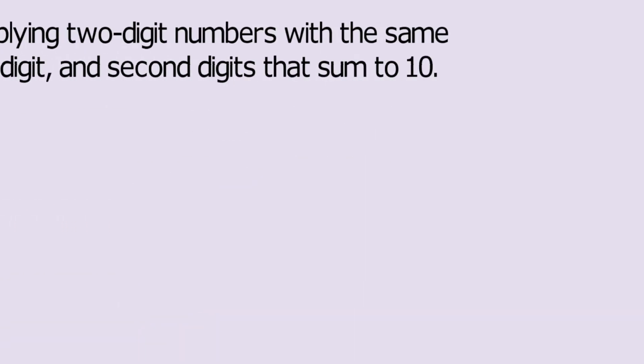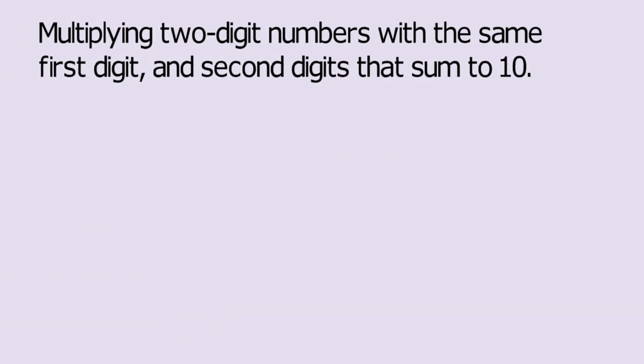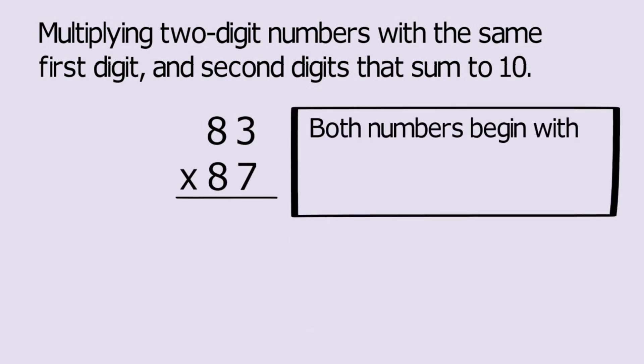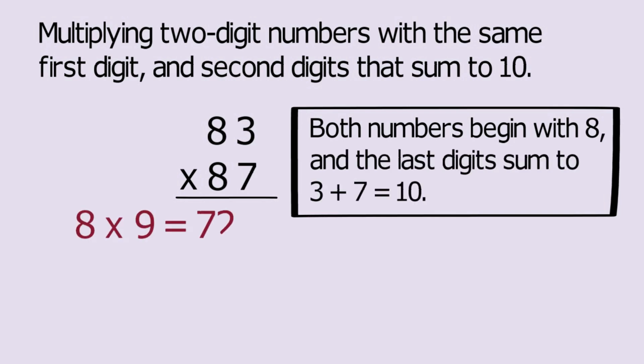We can use a similar trick when multiplying two digit number with the same first digit and the second digit number that sums to 10. The answer begins the same way that it did before, the first digit multiplied by the next higher digit followed by the product of the second digit. For example, let's try 83 x 87. Both the numbers begins with 8 and the last digit sums to 3 plus 7 is equal to 10. Since 8 x 9 is equal to 72 and 3 x 7 is equal to 21, the answer is 7221.